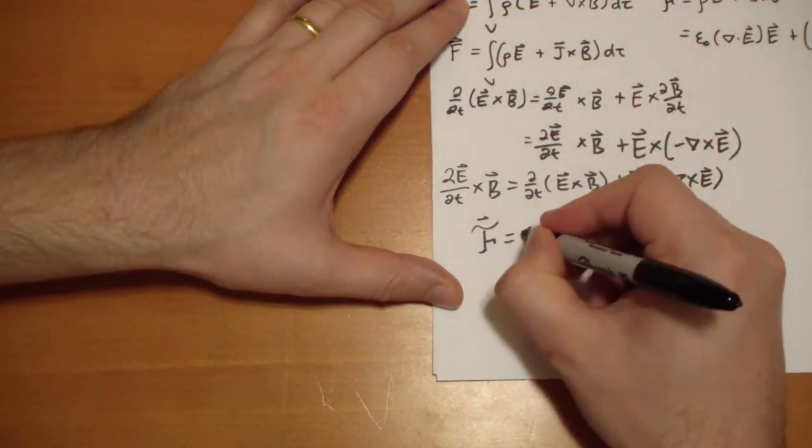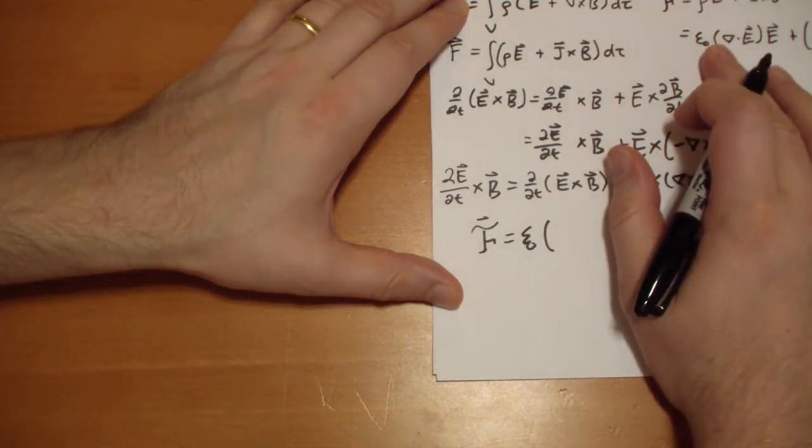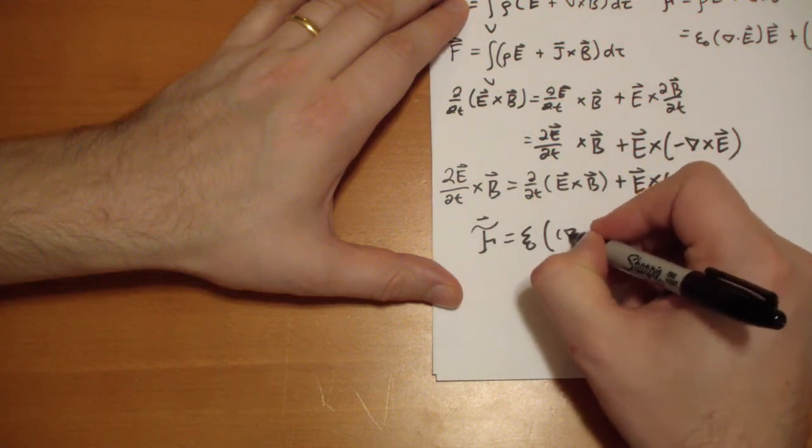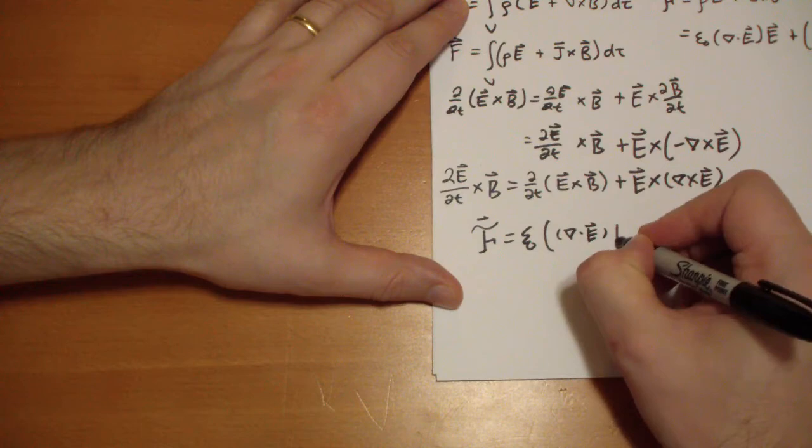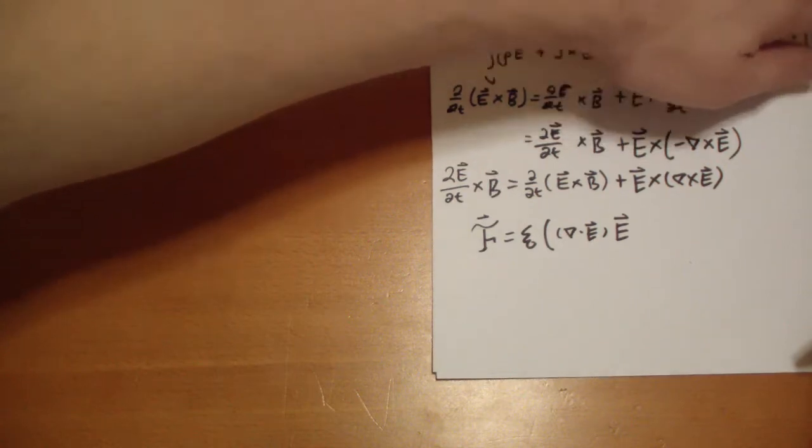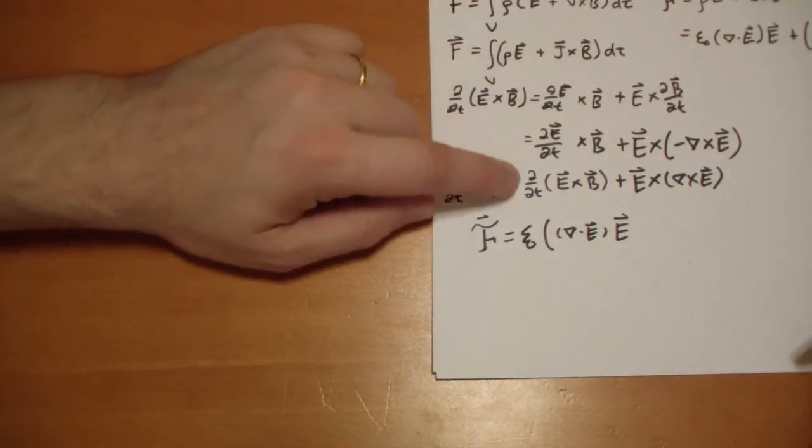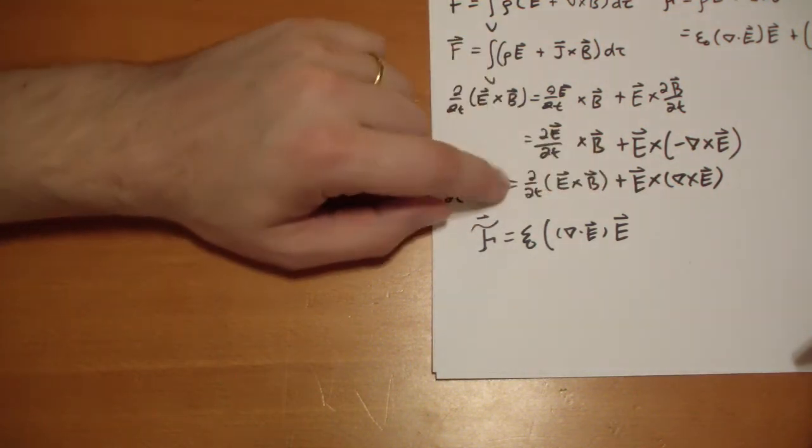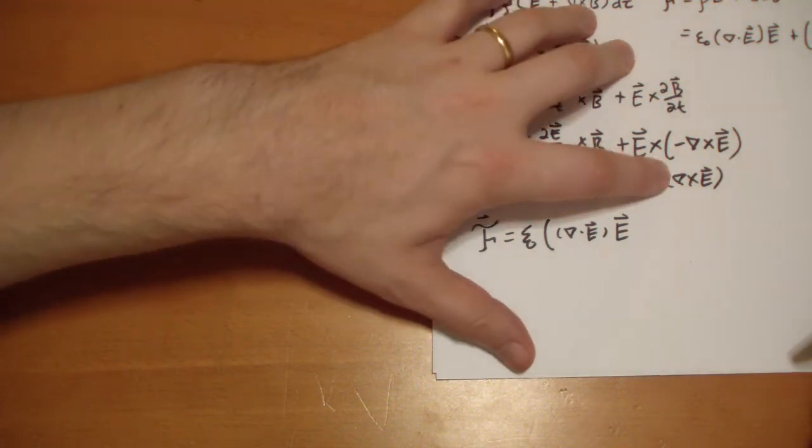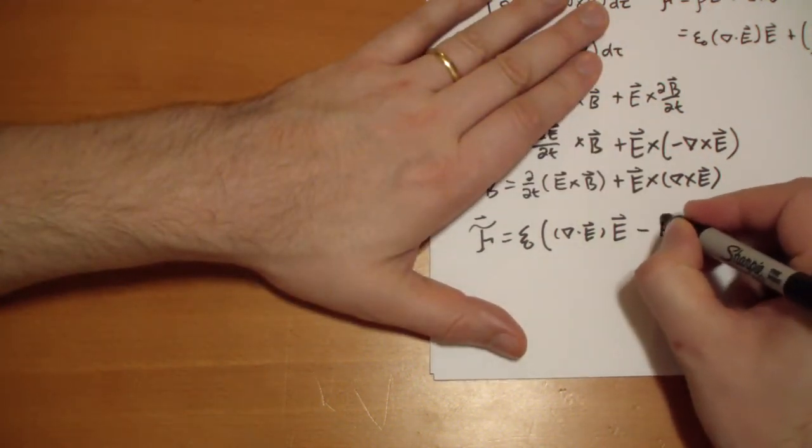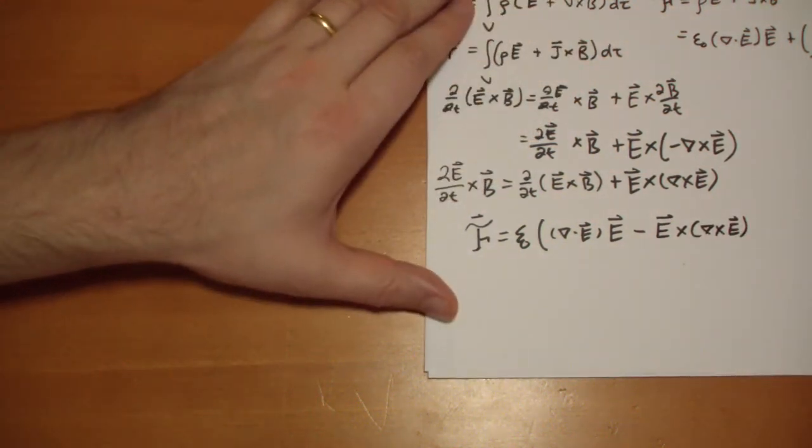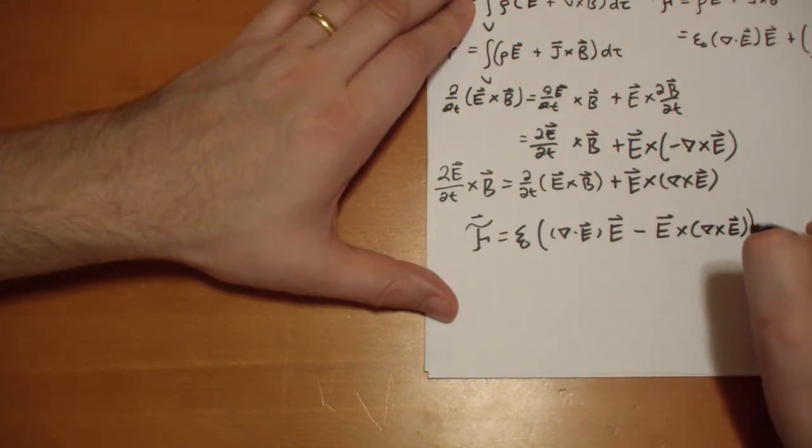So we're going to plug this in up here, and I'm quickly running out of room. So let me just write it out here. The F vector in its full and total glory. We have an epsilon naught. We have our divergence of E cross E. So let's write that out. Divergence of E vector times E. And we have another term.